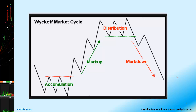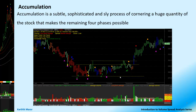Now let's look at the Wyckoff market cycle in detail. There are four phases: accumulation, markup, distribution, and markdown. Accumulation is a subtle, sophisticated, and slight process of cornering huge quantities of stock that makes the remaining three phases possible. As you can see in this chart, the prices were coming down and then started moving sideways — the market was sluggish, there was no interest in the stocks. However, the smart money or the strong hands had been accumulating the stock, and the volume had already started dropping. Once the accumulation is done, the smart money is ready to mark up the stock, and you can see the stock broke out of the accumulation range on high volume — a widespread bar.